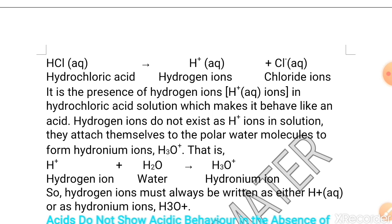It combines with the polar water molecule to form hydronium ion which is H3O+. Look for the chemical reaction here. When hydrogen ion combines with water, it forms hydronium ion. So, hydrogen ion must always be written as either H+ aqueous or as H3O+.